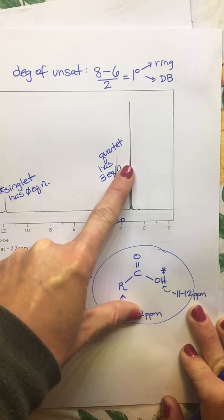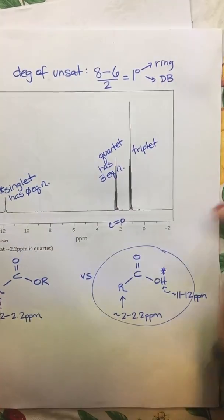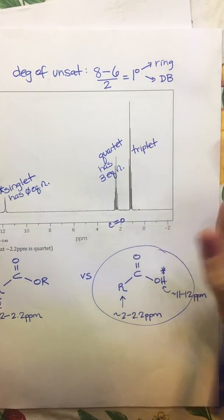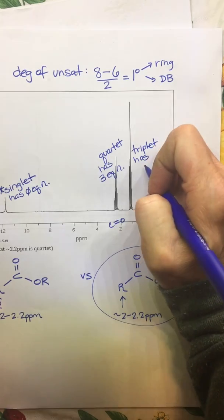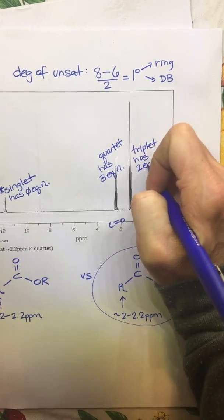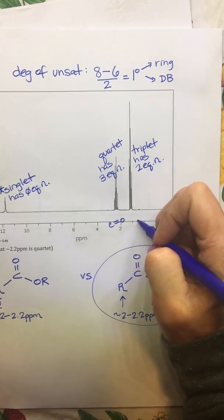And then right here, if we count our lines, we have one, two, three. This is a triplet. That means the hydrogens that are giving this signal have, or has, two equivalent neighbors.